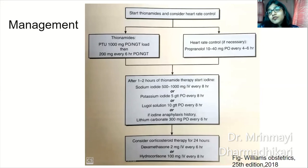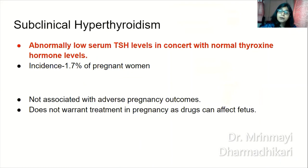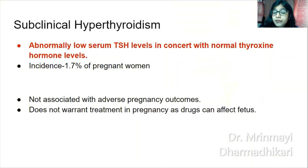Subclinical hyperthyroidism: abnormally low TSH levels with normal thyroxine hormone levels, with an incidence of 1.7% in pregnant women. It is not associated with adverse pregnancy outcome and does not warrant treatment in pregnancy, as antithyroid drugs can affect the fetus.